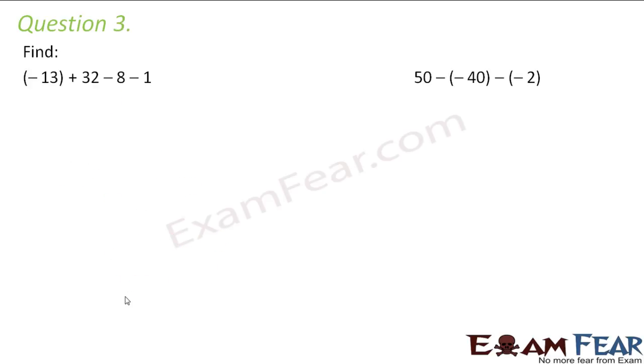Question number 3. Find minus 13 plus 32 minus 8 minus 1. So in these kind of problems where you have multiple terms, maybe 3, 4 or 5 terms, what you do, you collect all the positive terms together, you collect all the negative terms together. So that is what we will do here. So here we have three negative terms. So let us put them all together.